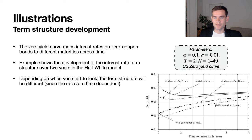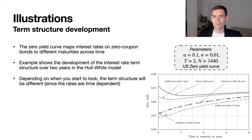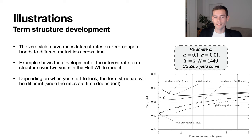Now let's look at the term structures generated by the model. By taking the weighted average of interest rates over any given period, we obtain the effective interest rate for that period, and plotting these over time gives a yield curve. Several yield curves are shown: the initial yield curve, the curve after six months, after 12 months, and so on. Because the yield curves depend on the short rate, and the short rate varies over time, each yield curve looks slightly different depending on the starting time point analyzed.